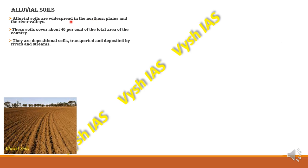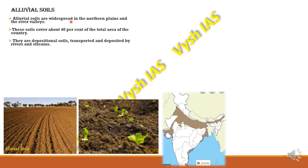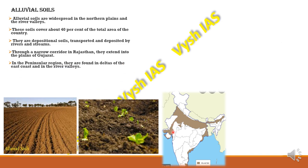Alluvial soils are depositional soils — they are transported and deposited mainly by rivers and streams originating in the Himalayas or mountains. Through a narrow corridor in Rajasthan, they extend into the plains of Gujarat. In the peninsular region, they are found in the deltas of the east coast and in river valleys.